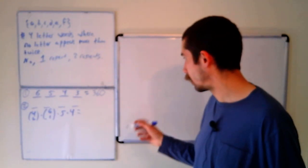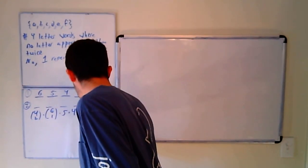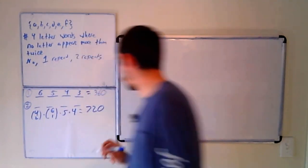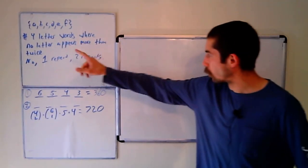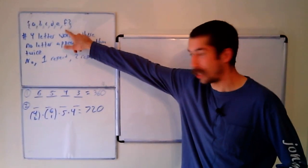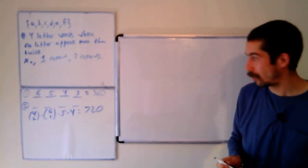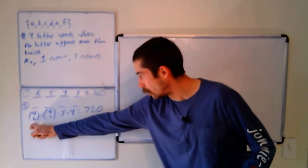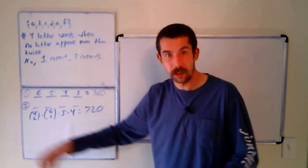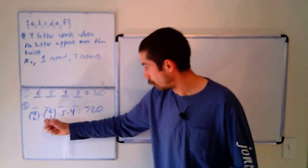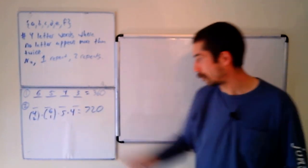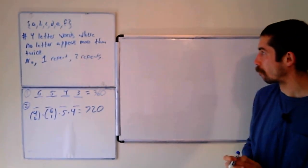So this is just four choose two times six times five times four, plug that into a calculator. It works out to be 720. So there's 720 four letter words out of these with this alphabet that has one repeat. Find the location where the repeat occurs. What is the repeated letter? And then fill in the blanks.